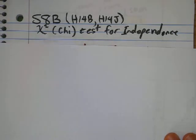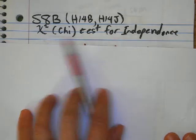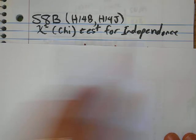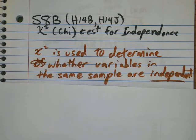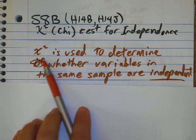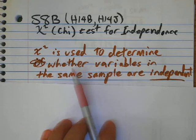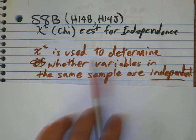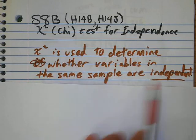Okay, here we go. We're going to learn how to find chi-square tests for independence. So before we get started, what we're going to be doing is we're going to decide whether variables in a sample are independent.